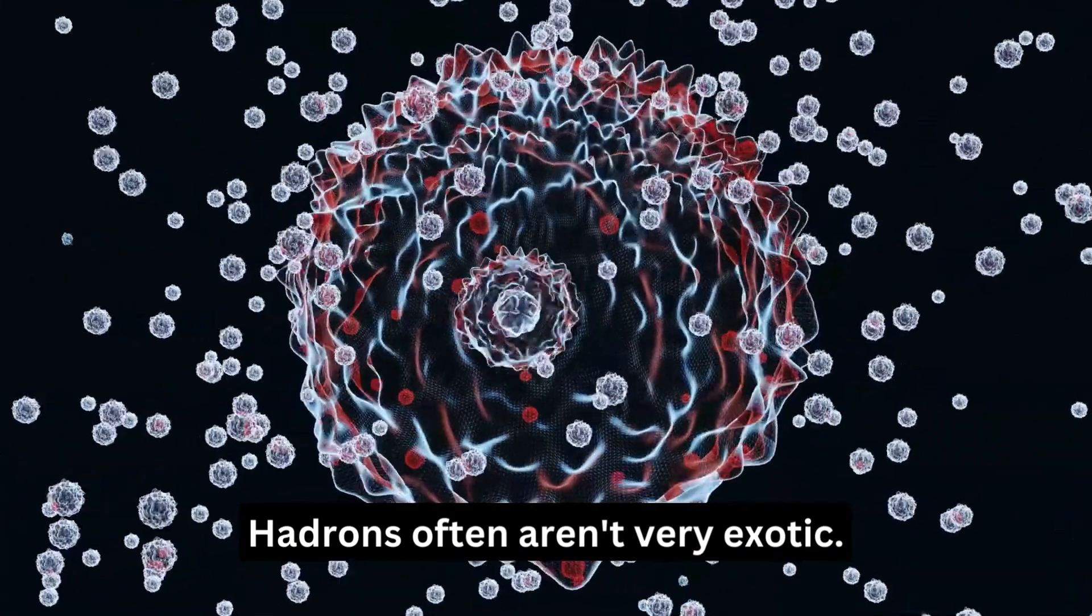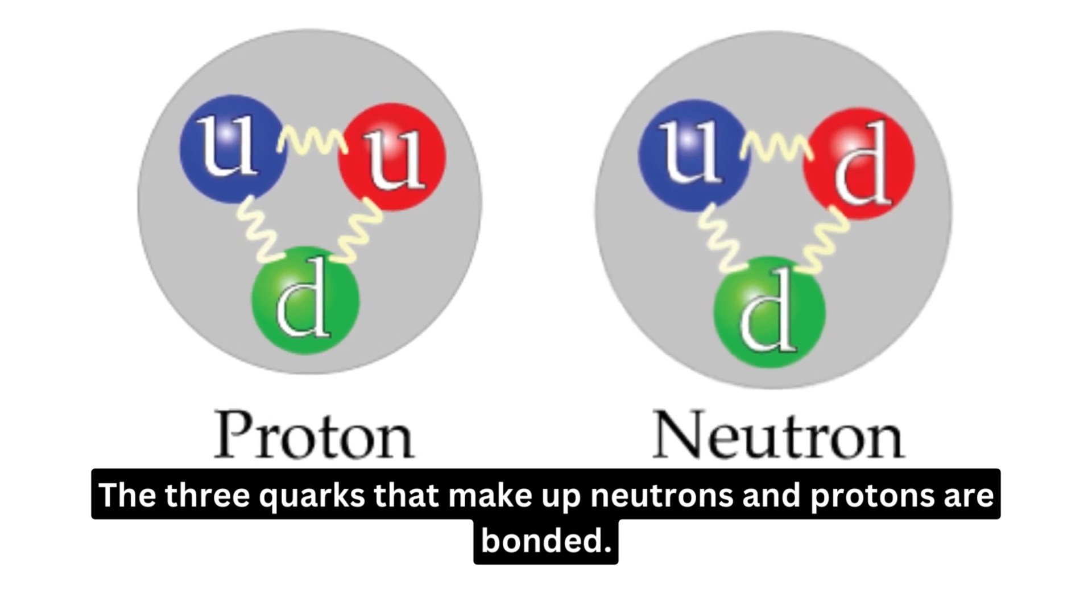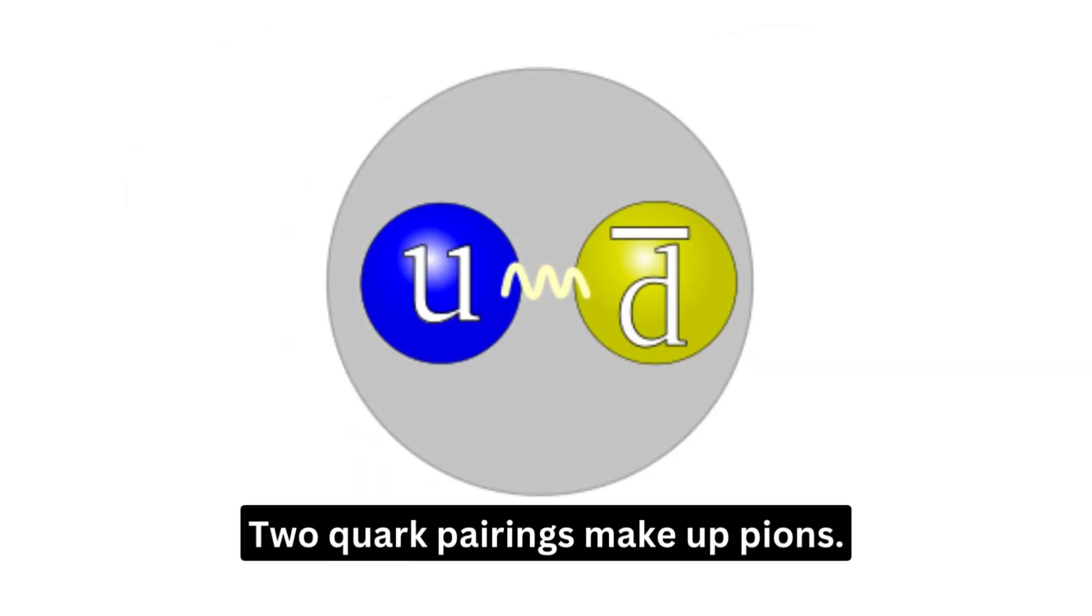Hadrons often aren't very exotic. For example, the three quarks that make up neutrons and protons are bonded. Two quark pairings make up pions.